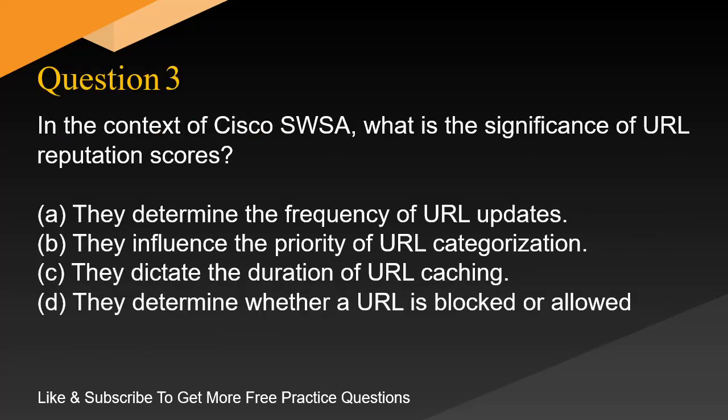Question 3. In the context of Cisco SWSA, what is the significance of URL reputation scores? A. They determine the frequency of URL updates. B. They influence the priority of URL categorization. C. They dictate the duration of URL caching. D. They determine whether a URL is blocked or allowed.